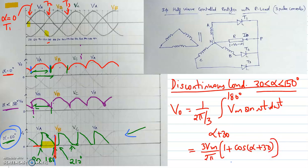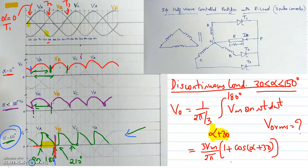In a similar way, you also need to find the V0-rms for the discontinuous case. That completes the explanation of the three-phase half-wave controlled rectifier with resistive load. For the discontinuous conduction mode, the lower limit is alpha plus 30 degrees, where alpha is always greater than 30 degrees. The upper limit is 180 degrees because after 180 degrees the thyristor enters reverse bias mode and gets commutated.